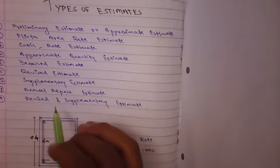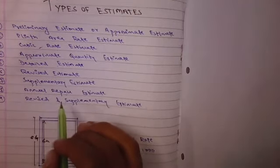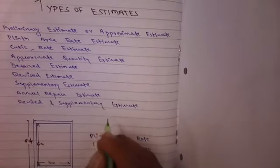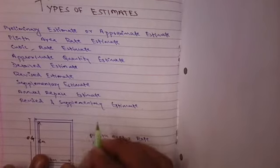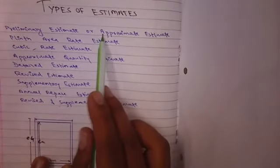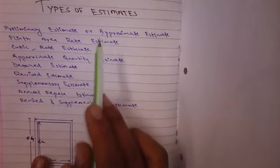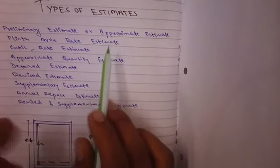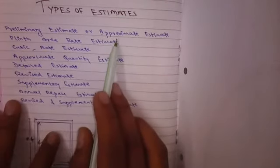...estimates according to examples. Preliminary approximate estimate: in this type of estimate, the calculation is done on the basis of per unit rate, means per unit room or classroom. We will take an example of a school. There are...